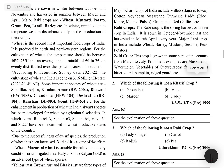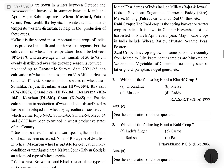Major Kharif crops in India include millets (bajra, jowar), cotton, soybean, sugarcane, turmeric, paddy, maize, moong dal, groundnut, and red chillies. Rabi crops are spring-harvest winter crops, sown in October-November and harvested in March-April. Major Rabi crops include wheat, barley, mustard, sesame, peas, and potato.